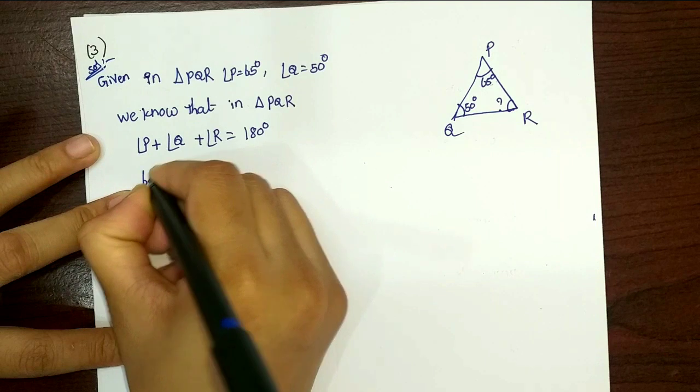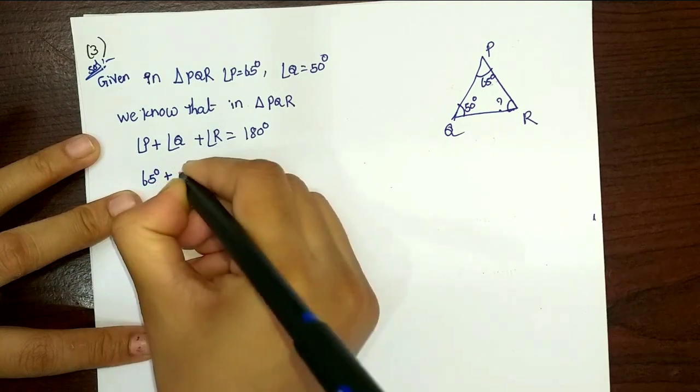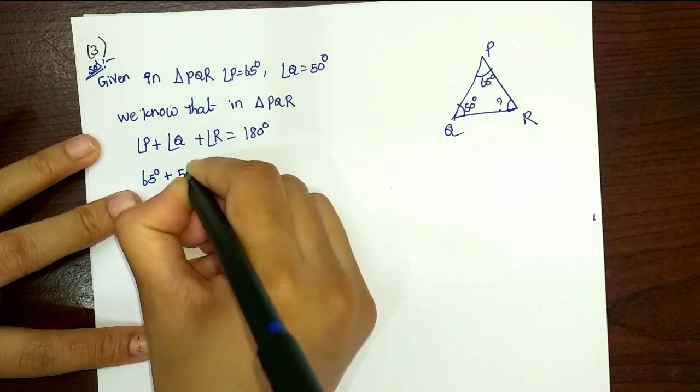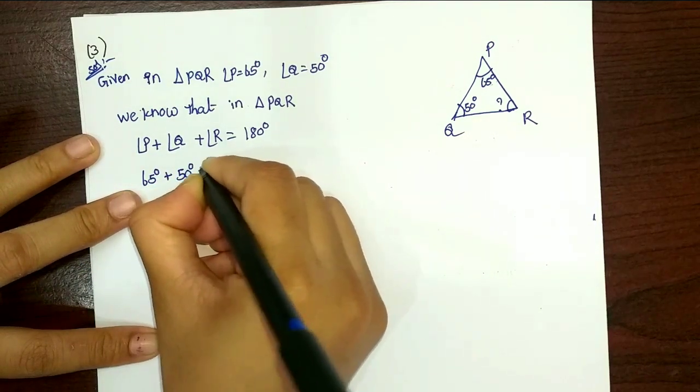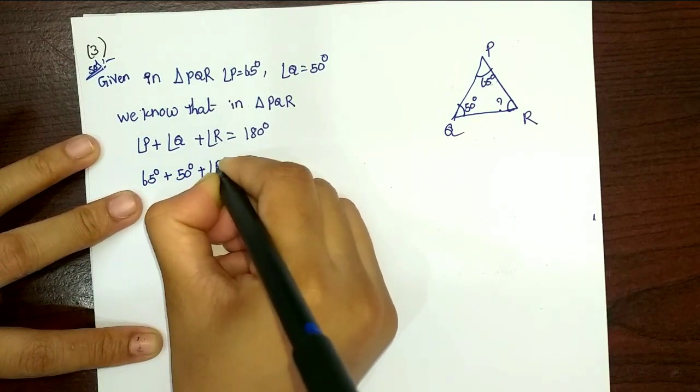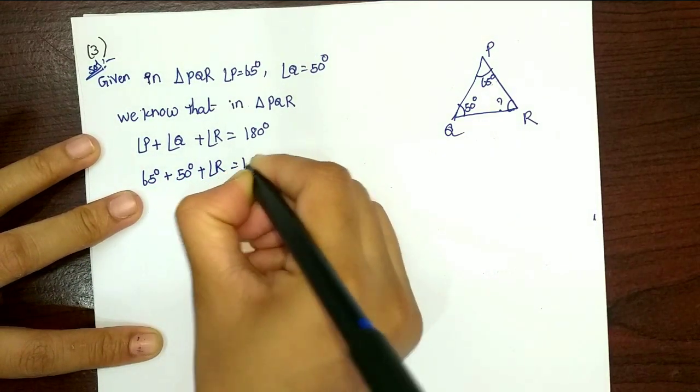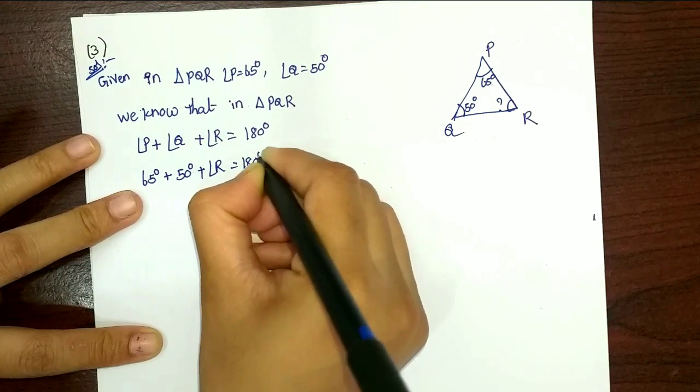Angle P is equal to 65 degrees, and the total is equal to 180 degrees.